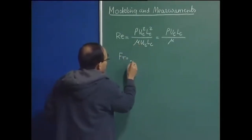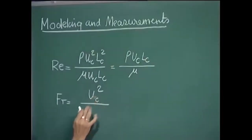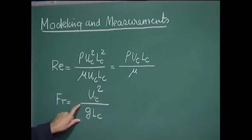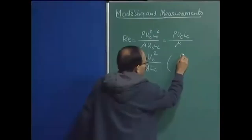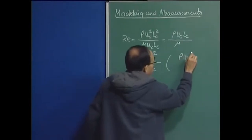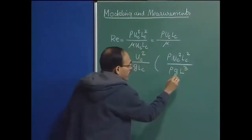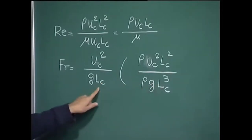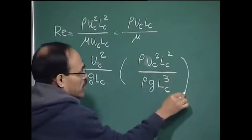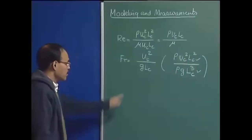Similarly, the Froude number definition comes out as the ratio of inertial force to gravitational force. The inertial force expression is ρ·Uc²·Lc² and gravitational force is ρ·g·Lc³. The density and Lc² cancel, giving us Uc² divided by g·Lc. So the definition of Froude number is the characteristic velocity squared divided by acceleration due to gravity times the length scale.